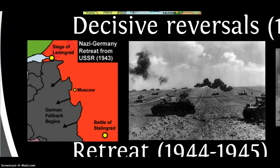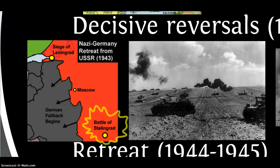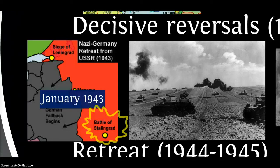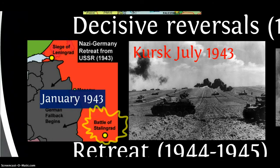The Battle of Stalingrad was particularly significant. In order to try and secure the oil fields of Baku, Hitler had three army groups in Russia. One army group was driving south to capture those oil fields to fuel the German war machine, and they felt they needed to take Stalingrad to do that. In the Battle of Stalingrad, they lost it eventually. The German Sixth Army was surrounded by Russian forces, ordered to hold their ground, and in January 1943 they surrendered. The Germans then organised a massive counter-offensive — Operation Citadel — hoping to stem the advance of the Red Army, but it failed.